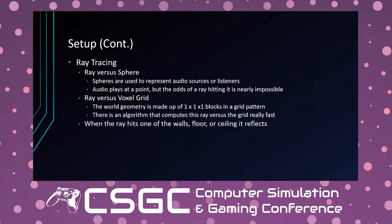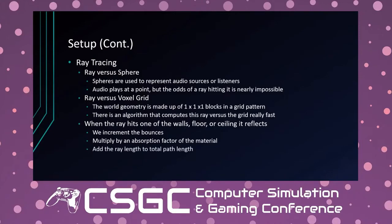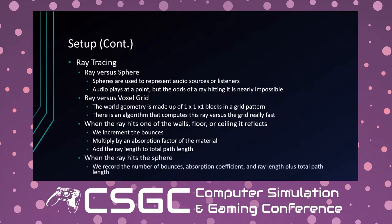When a ray hits a wall, floor, or ceiling it reflects, and we increment the bounce count and multiply an absorption factor based on the material. If starting energy is 1.0 and the absorption factor is 5%, we multiply by (1 − 0.05) to reflect 95% of the energy back into the system. We also accumulate the total path length so it can be used later. When the ray hits a sphere, we record the bounce count, current absorption coefficient, and total path length.